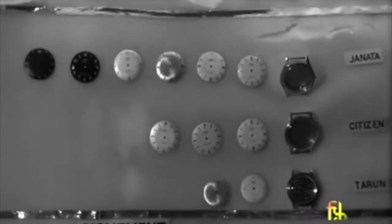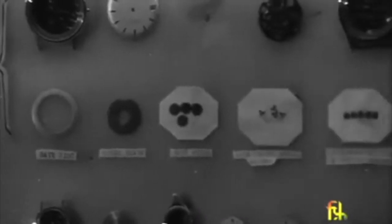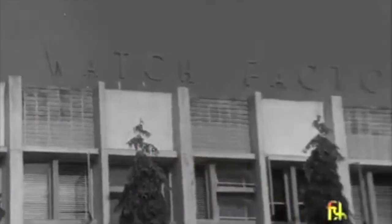Initially the cases and the watch movements were imported from Japan, but gradually in the HMT manufacturing units the cases as well as the 17 jewels and the 21 jewels movements were made. The HMT 020 17 jewels movement became very popular and was put into most of the HMT watches at that time.